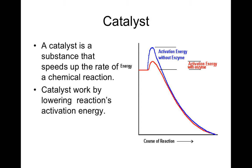A catalyst speeds up the rate of the chemical reaction, and as you can see on this graph, the way it speeds up the chemical reaction is by lowering what's called the activation energy. All reactions basically need a certain amount of energy to get started. Think of it like this — if there was a giant boulder and you had to push it up a hill by yourself, that would take a lot of energy. But if you added 20 friends, everybody's sharing that energy, so it's going to take a lot less energy to get that boulder up the hill. An enzyme lowers the amount of energy needed to get a reaction going.